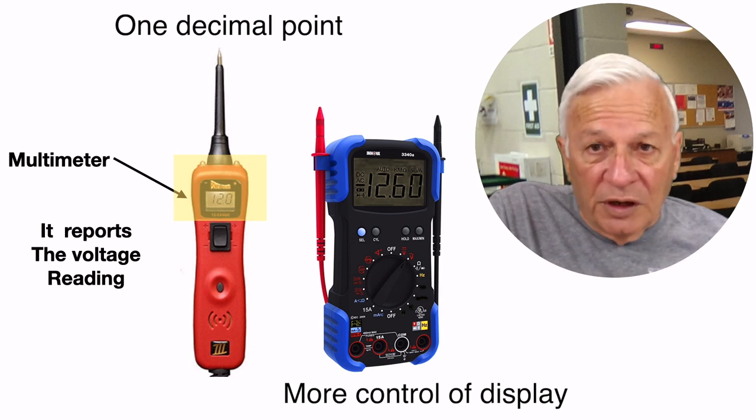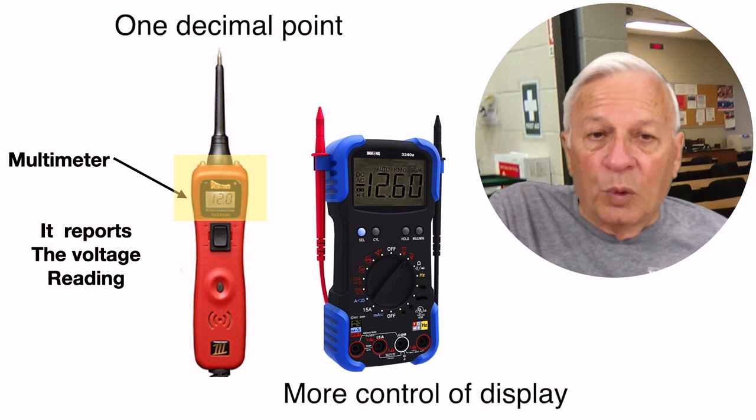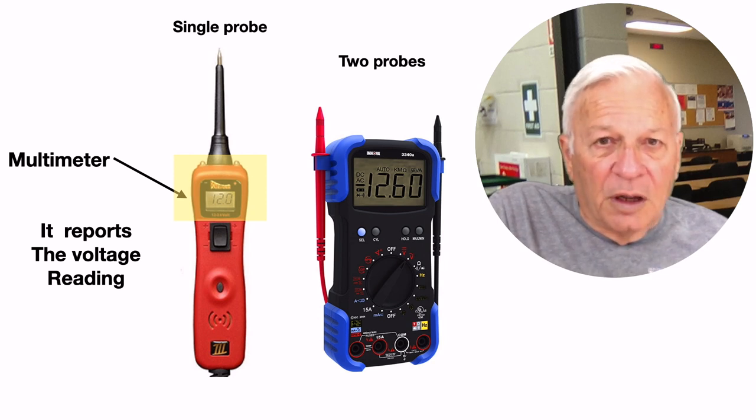But for troubleshooting diagnostics, the single decimal on the power probe works just fine. Another advantage is your circuit voltage checks are quickly performed with just a single probe connection, unlike using the DVOM's two meter leads.